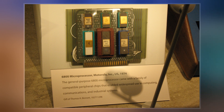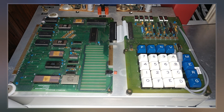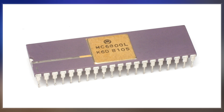The 6800 has a 16-bit address bus that can directly access 64 KB of memory and an 8-bit bi-directional data bus. It has 72 instructions with 7 addressing modes for a total of 197 opcodes.